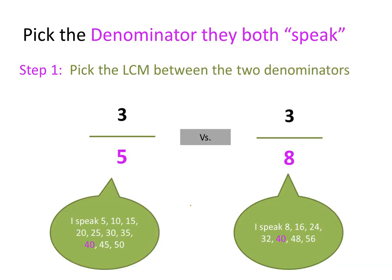In order to compare two fractions, you want to do the same thing. You want to pick the same language — the same denominator language. What we're doing here in step 1 is picking the LCM, the least common multiple, between the two denominators.